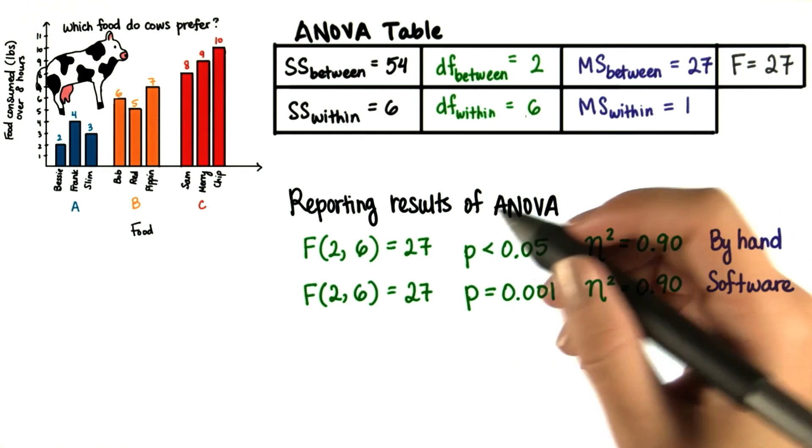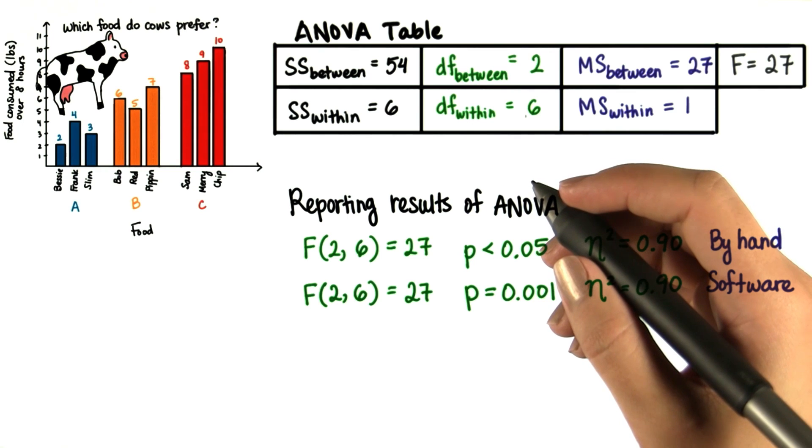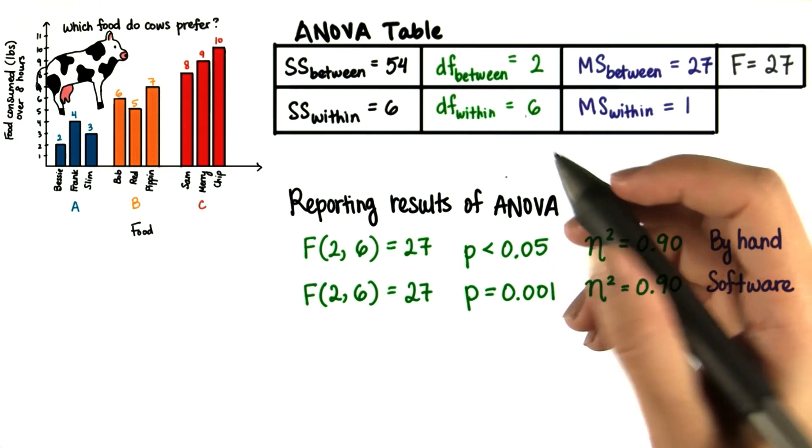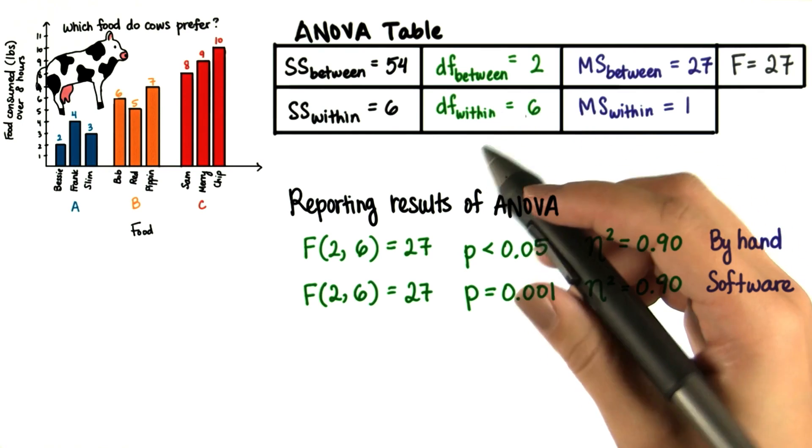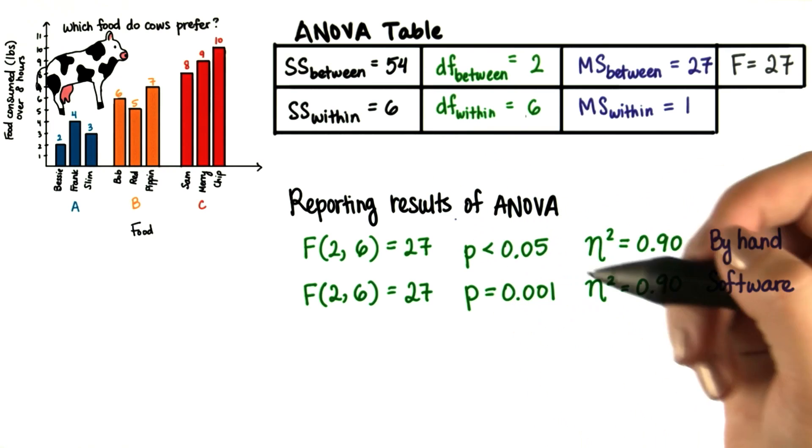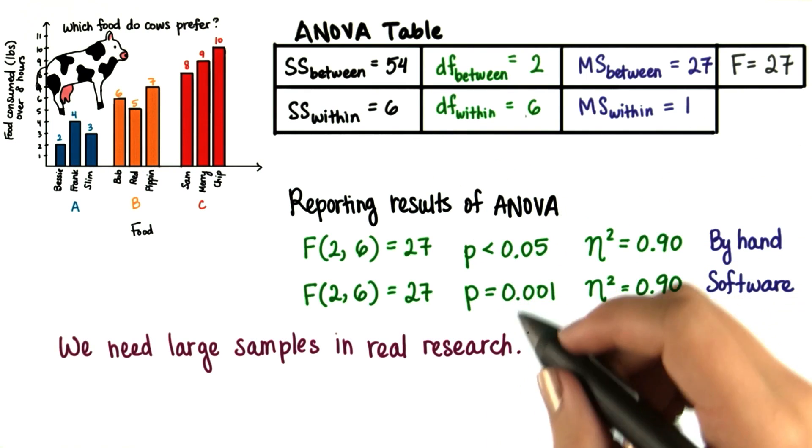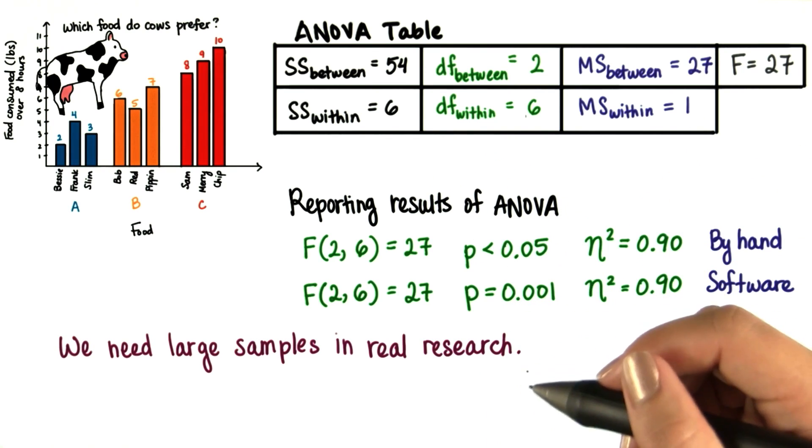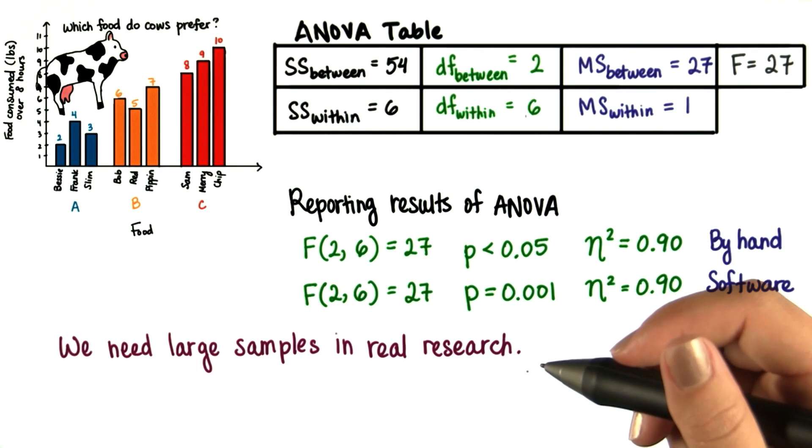Notice that we frequently used small samples in our examples and problem sets. However, we wouldn't normally use such small samples, especially in real research. But if we use large samples, we can't do ANOVA by hand. That would just take too long.